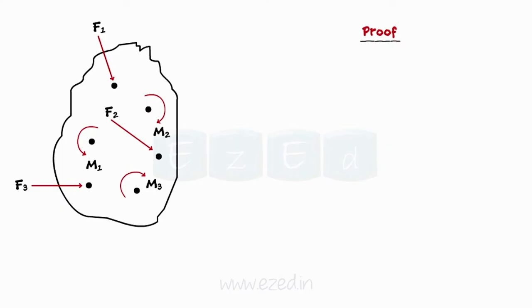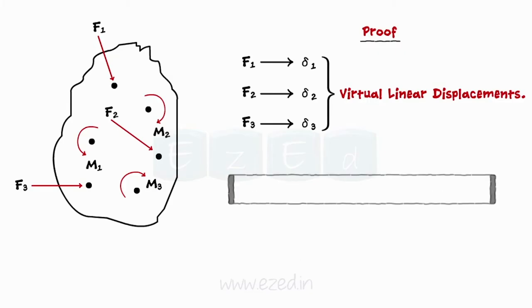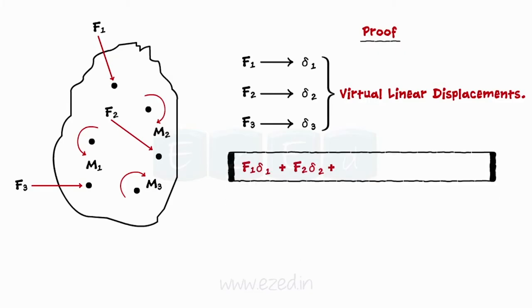The linear forces F1, F2, F3 will have linear displacements as δ1, δ2, δ3 respectively. These displacements are known as virtual linear displacements. Hence, the work done due to these forces is given by the summation of the product of the magnitude of a force and its virtual linear displacement. This work done is known as virtual work.